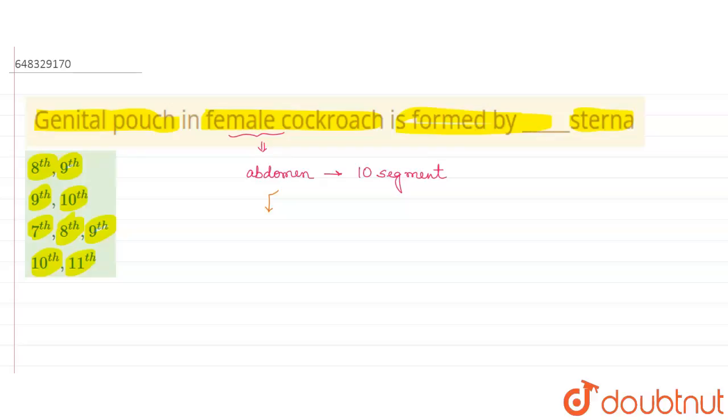Along with the 7th and 8th, if we take the 9th, then all together we find that they form the brood or the genital pouch. They form the genital pouch.